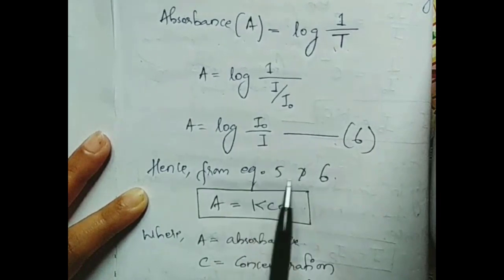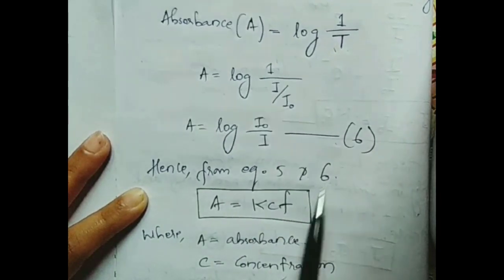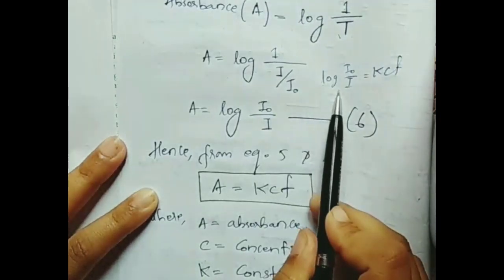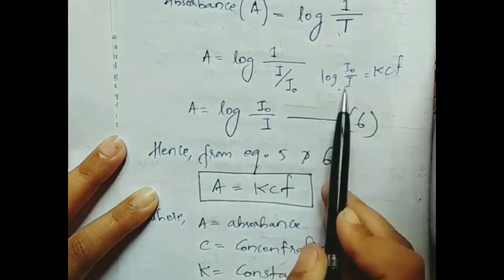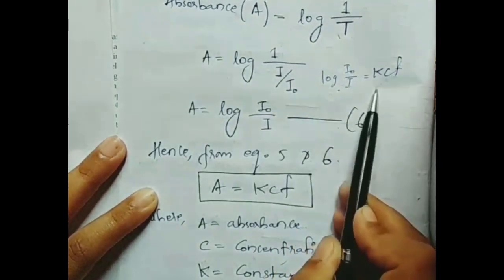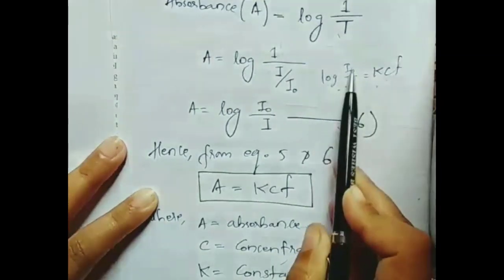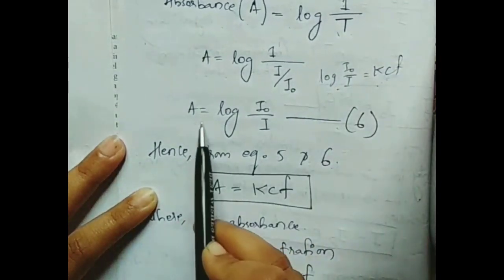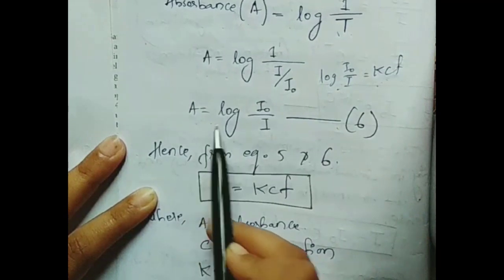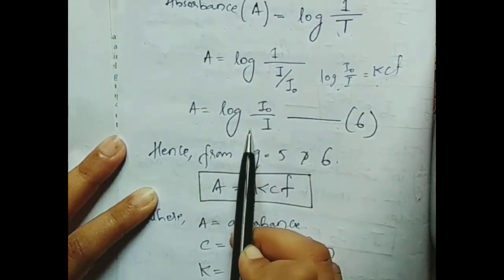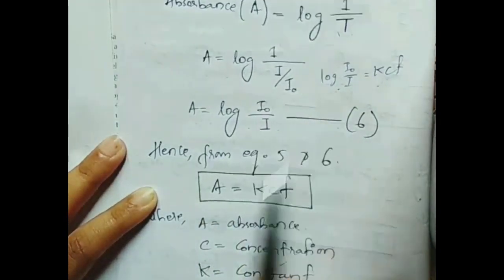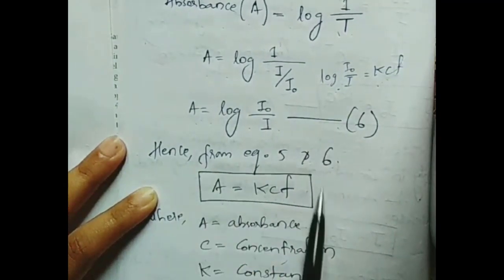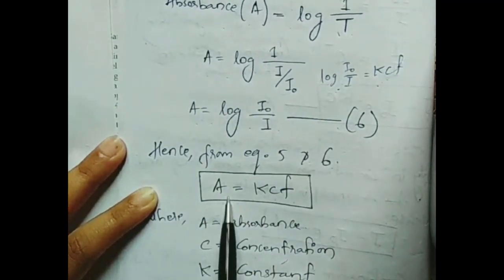From equation 5 we have log(I naught / I) equals KCT, and from equation 6, A equals log(I naught / I). Therefore, substituting, we get the final equation: A equals KCT. Thank you.